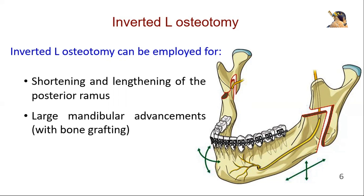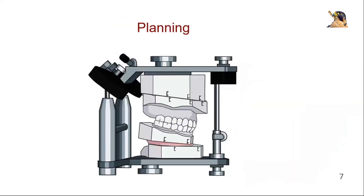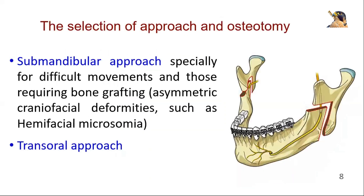To illustrate the procedure, we will show the correction of mandibular retrognathism. Proper planning is required for inverted L-osteotomy. The osteotomy is usually performed using a submandibular approach, specially for difficult movements and those requiring bone grafting, and asymmetric craniofacial deformities such as hemifacial microsomia.